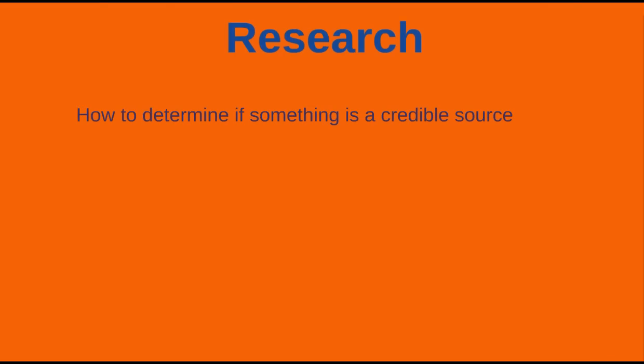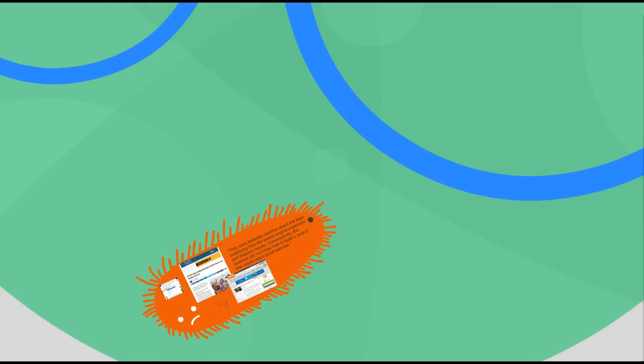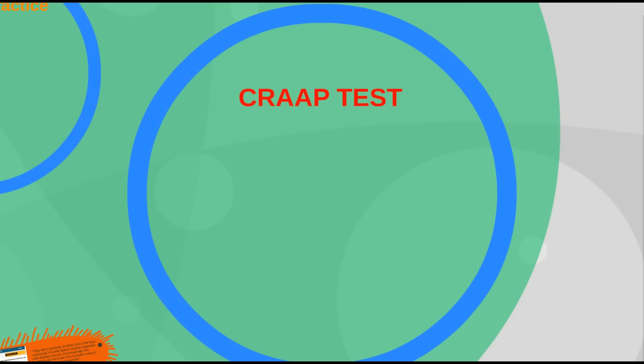Now that we've talked about the issue with Google, let's discuss what's going to be addressed in this video. First, I'll be talking about how do you determine if something's a credible source, how do you properly use Google with caution, and how do you use databases and access books digitally. So let's first start with how do you determine if a source is good.